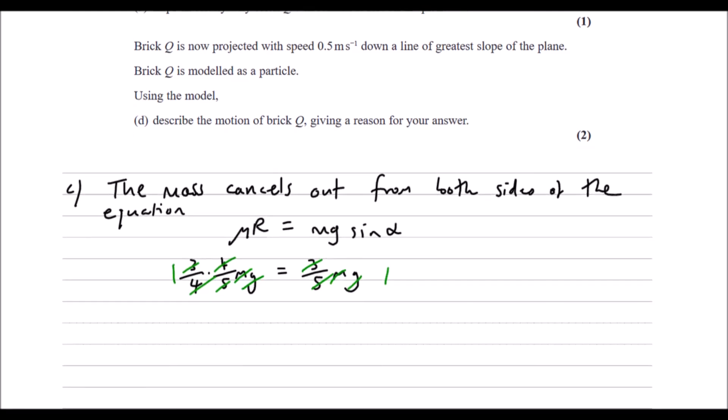Brick Q is now projected with a speed 0.5 meters per second down the line of greatest slope of the plane. Brick Q is modeled as a particle. Using the model, describe the motion of brick Q, giving a reason for your answer.